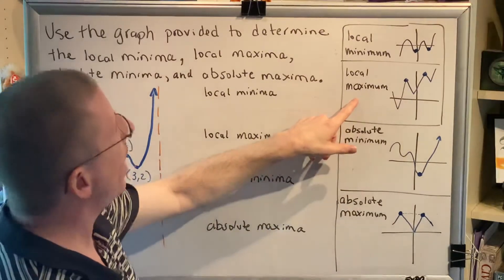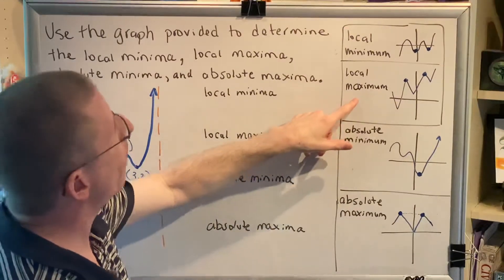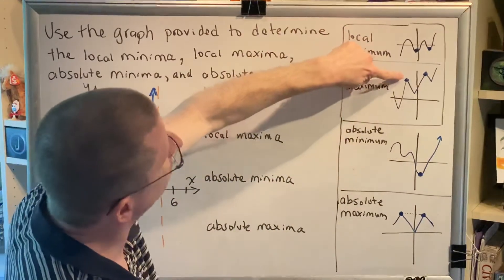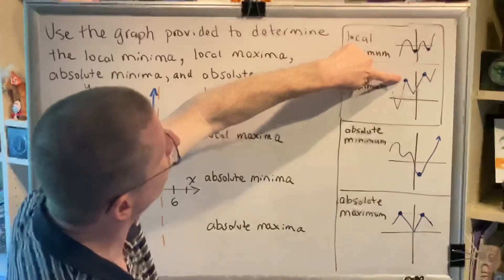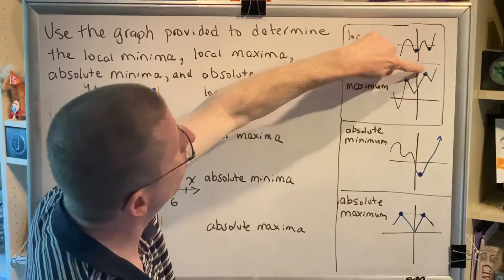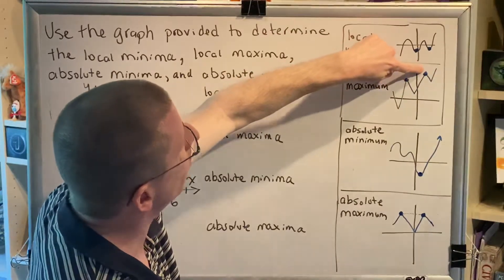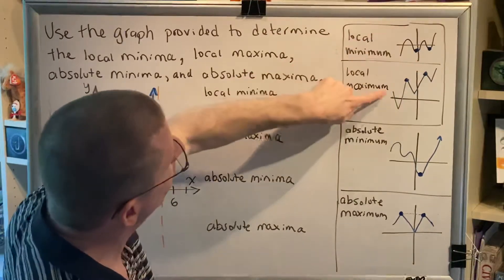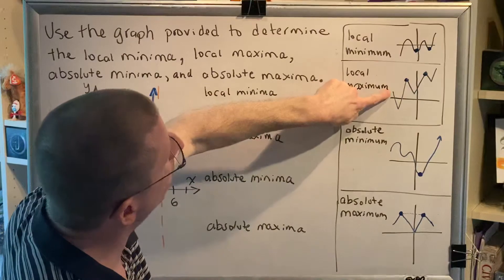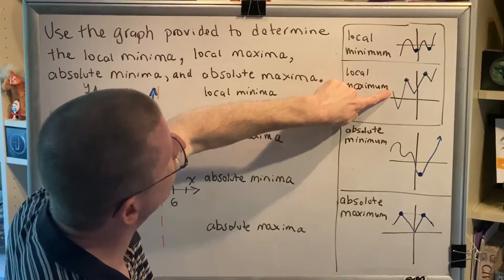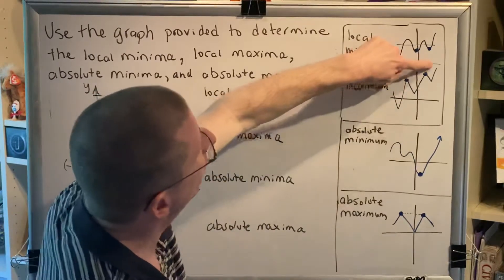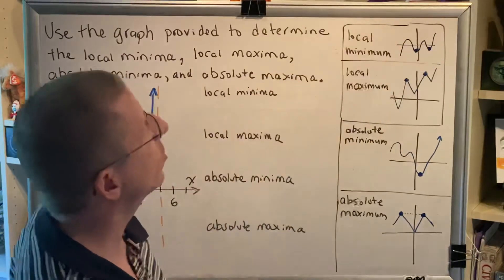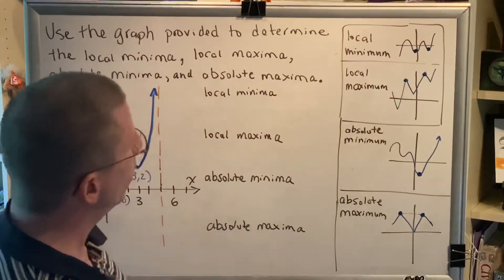A local maximum would be the top of the hill. For example, this is the top of the hill — that's a local maximum. This is also the top of the hill — that's a local maximum. But this endpoint is not because there are no points to the left of it, and this endpoint is not because there are no points to the right of it.